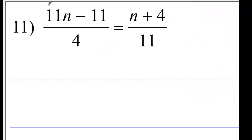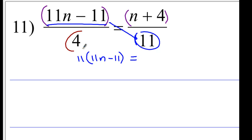If it has more than one term, put those in parentheses. This right here, and this right here needs to go in parentheses. This, you're going to multiply by that on the bottom. So, let's write this equation. 11 times 11n minus 11 equals, multiply the other one, 4 times n plus 4.